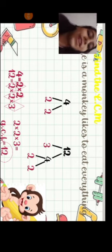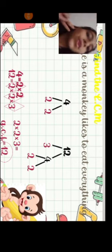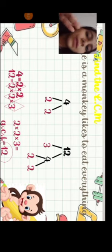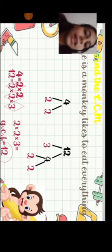So 4, what two factors multiply to get 4? 2 and 2. And 12, what two factors multiply to get 12? 3 and 4.